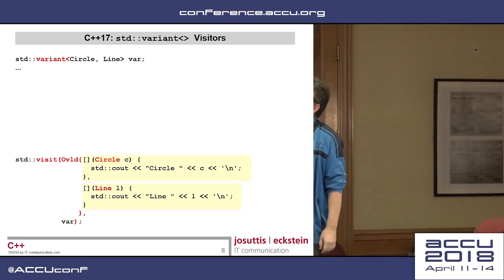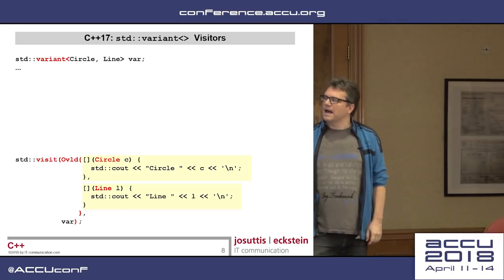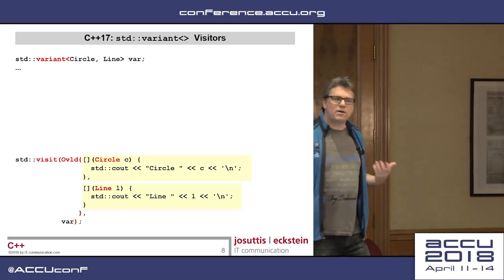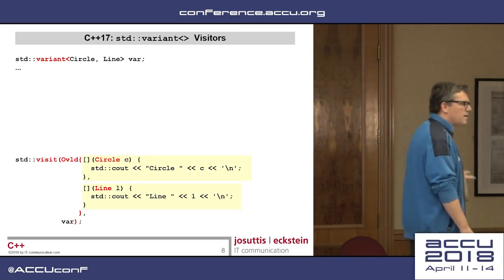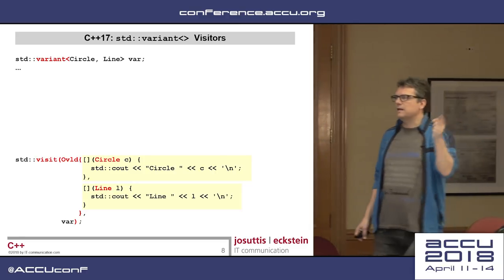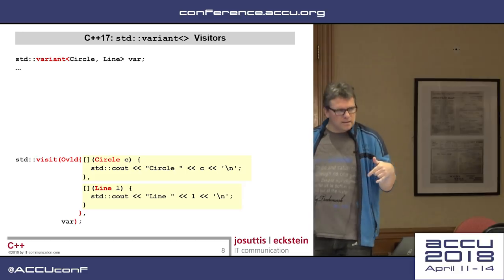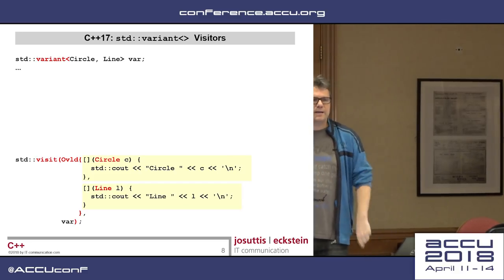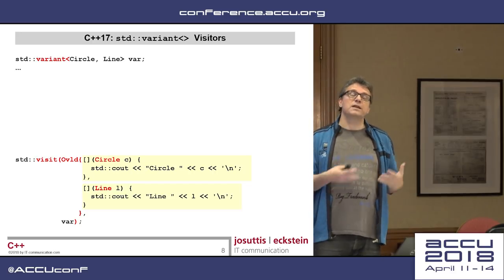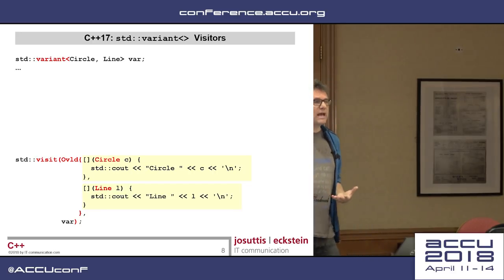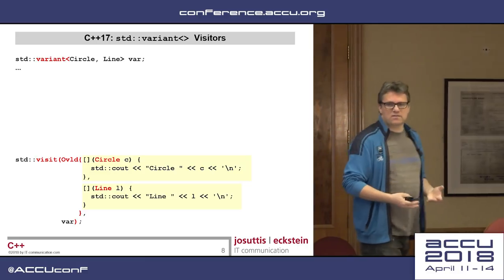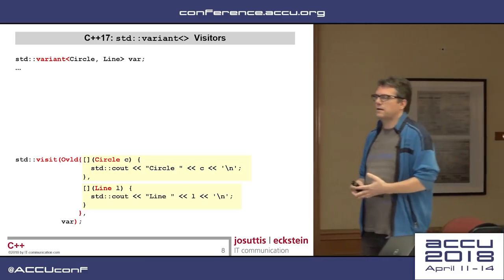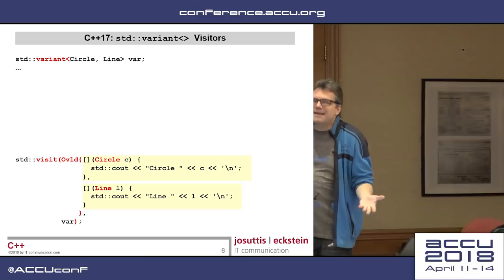You can have a variant and say, I want to visit this variant, and depending on its current value, I have one lambda dealing with the case that this is a circle currently, and one lambda dealing with the case that this is currently a line. And guess what? One of them might even be a generic lambda, so you can have a default case and a special case, however you like that. And what is the trick? What is done here?